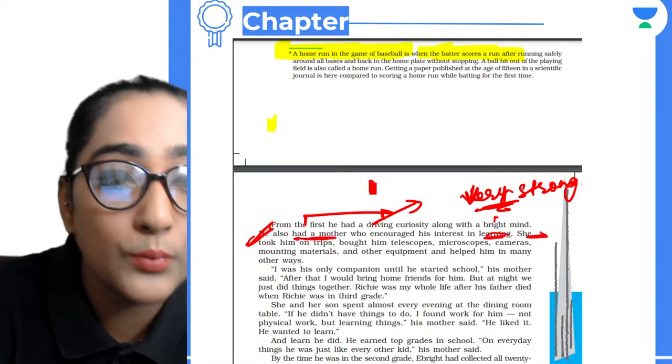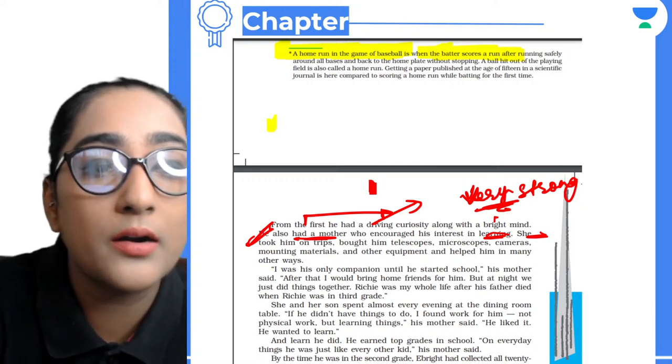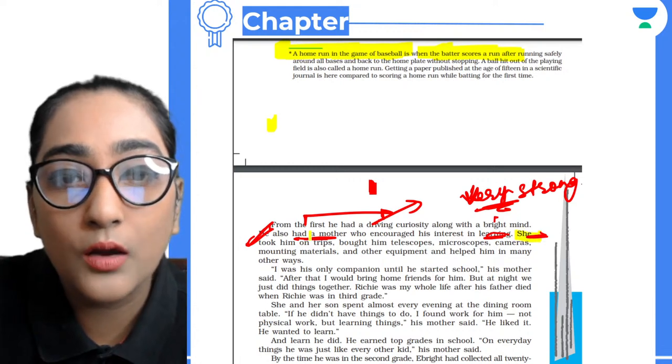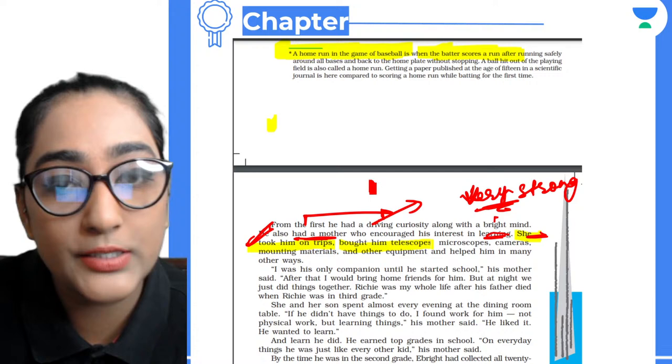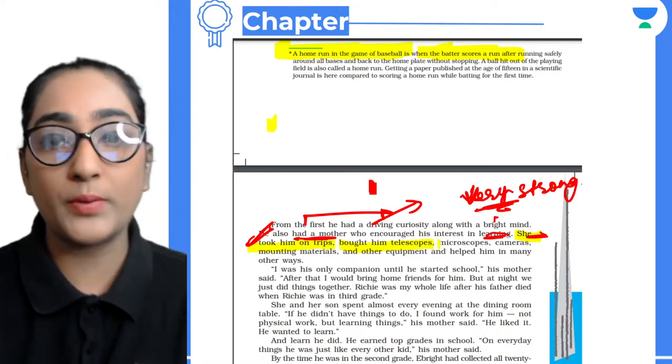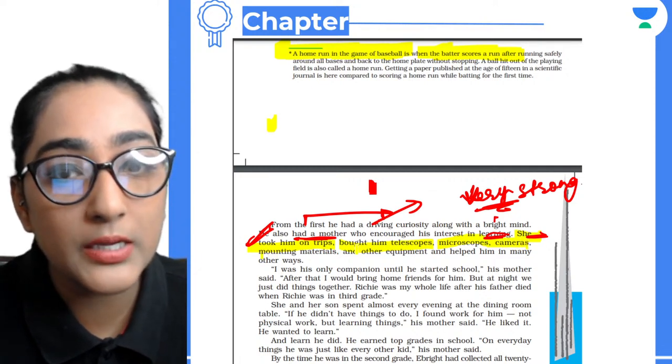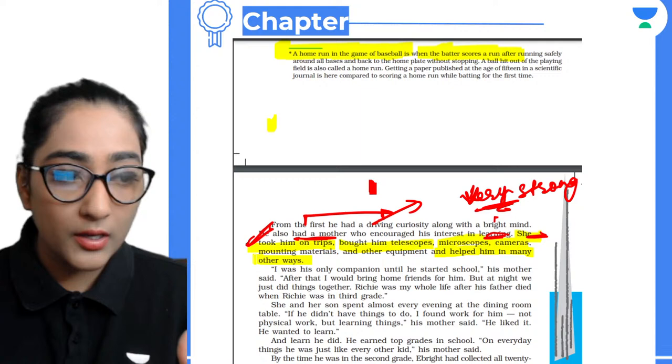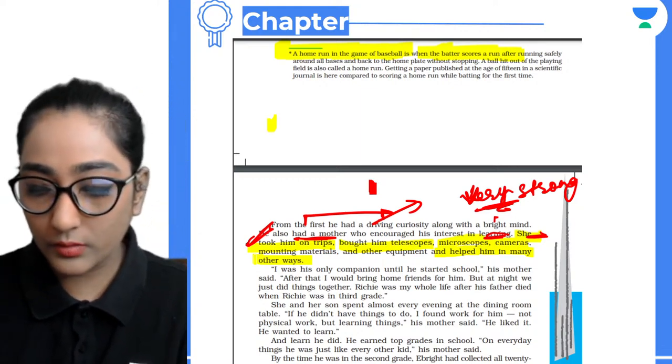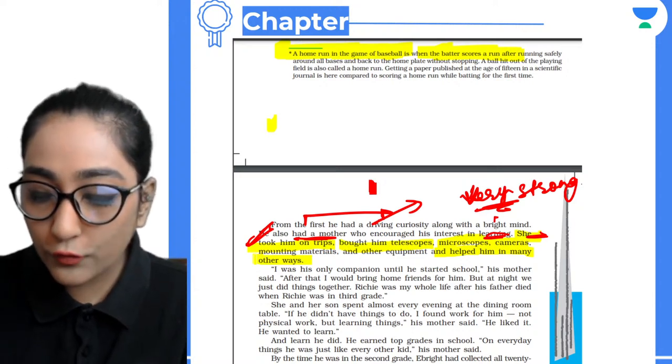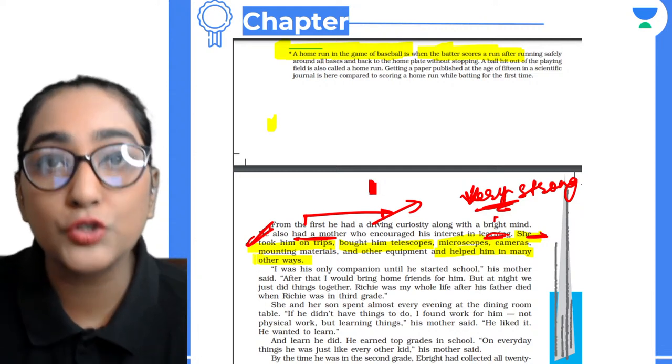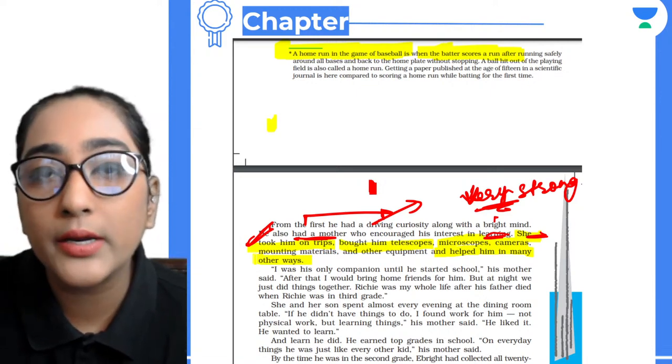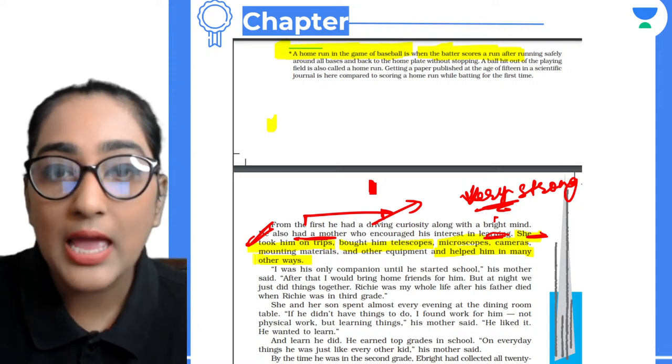She took him on trips, bought him telescopes, microscopes, cameras, mounting materials, and other equipment which helped him in many ways. His mother's role - what was her contribution? She took him on trips, bought telescopes, microscopes, cameras, mounting materials. I was his only companion until he started school, his mother said.